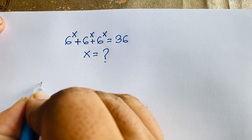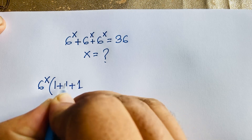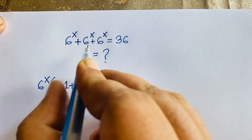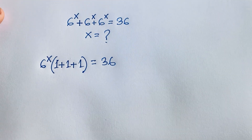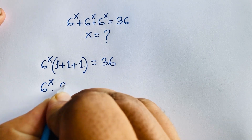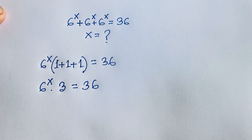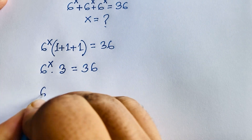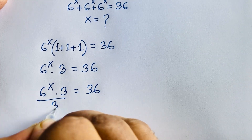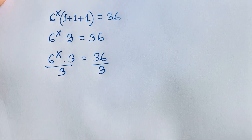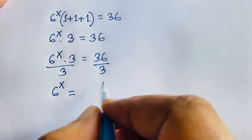So here 6 to the power x is common. It will be 1 plus 1 plus 1 is equal to 36. I divide. 6 to the power x is common, so 6 to the power x times 3 is equal to 36. I divide both sides by 3, then 3 cancels and we find out 6 to the power x is equal to 36 divided by 3, which will be 12.